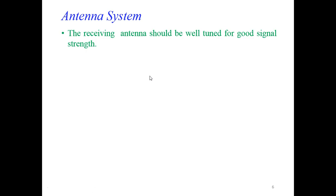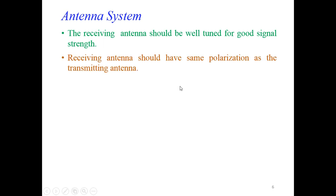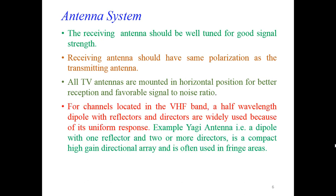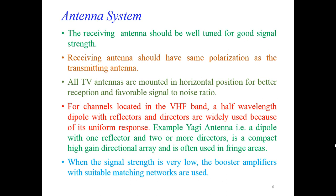The basic part of any wireless device is the antenna system. The receiving antenna should be well tuned for good signal strength. The receiving antenna should have the same polarization as the transmitting antenna so that it can receive a particular signal. All TV antennas are mounted in a horizontal position for better reception and favorable signal-to-noise ratio. For channels located in the VHF band, half wavelength (lambda/2) dipole with reflectors and directors are widely used — as we have seen in the olden days, we had the Yagi-Uda antenna. The signal strength is very low, so booster amplifiers with suitable matching networks are used.